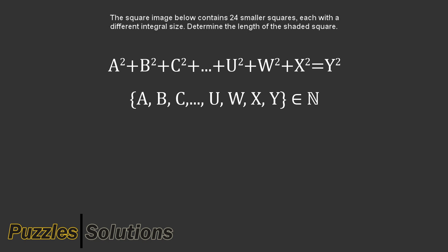So the side lengths of each square could either be 1, 2, 3, 4, 5, 6, 7, 8, etc. So for this equation, all the variables have to be natural numbers. To start solving this problem, we have to find the place on the square with the most information.